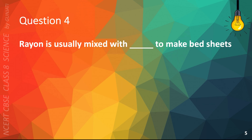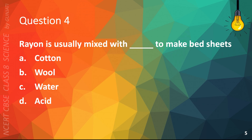Question 4. Rayon is usually mixed with blank to make bedsheets. A. Cotton, B. Wood, C. Water, or D. Acid. The correct answer is A. Cotton.